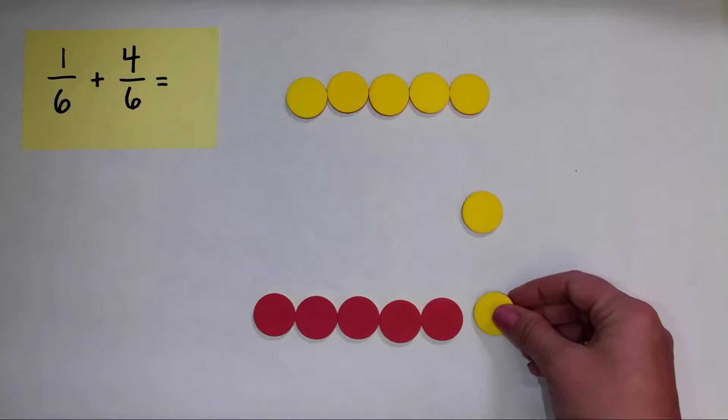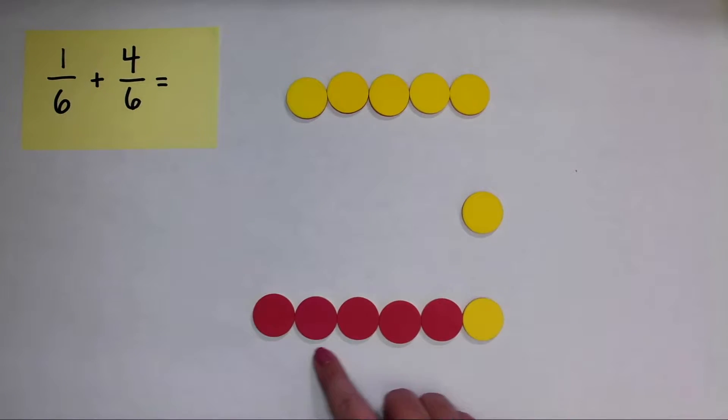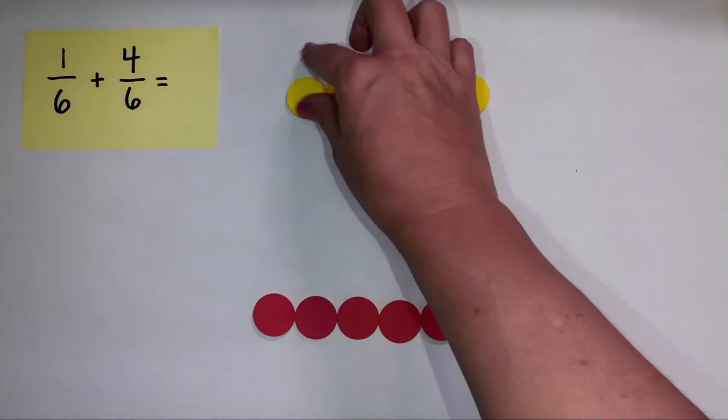But remember, I'm making groups of six. So I'm going to bring in this yellow counter. It's holding place to show this group of six.